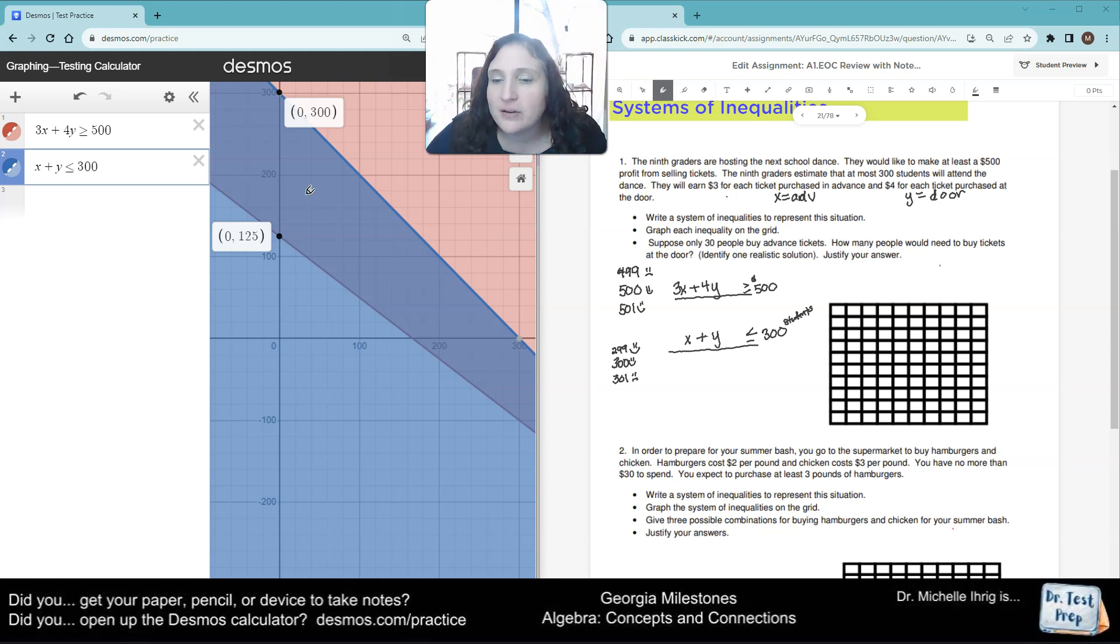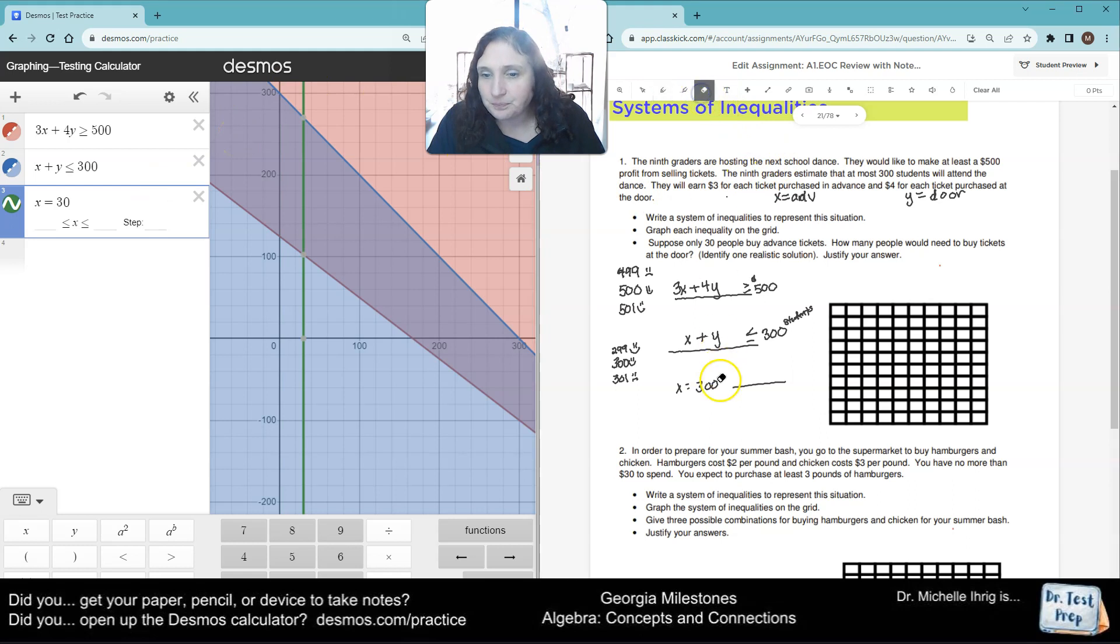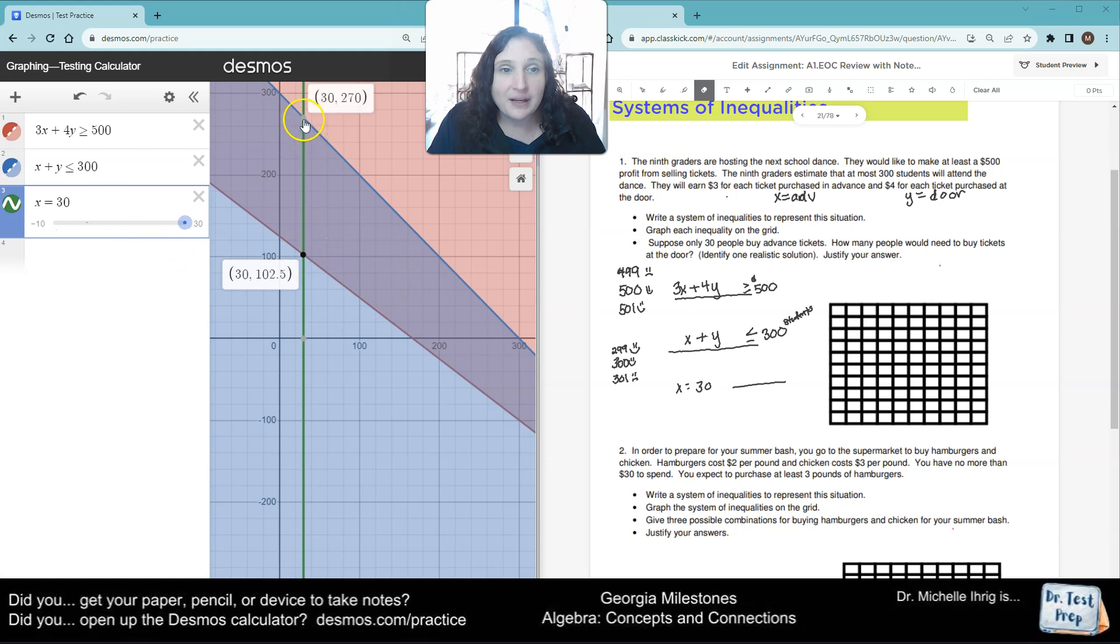But now it says 30 people get advanced. So how many people would need to buy at the door? So now I'm just going to say X equals 30. I wrote 300. I meant to say 30.